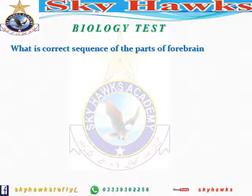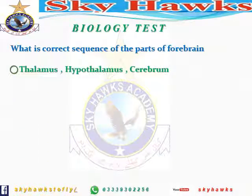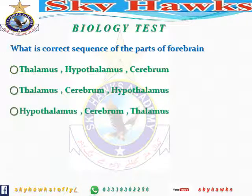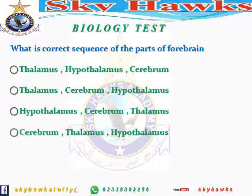Moving to our next question: what is the correct sequence of parts of the forebrain? The forebrain is divided into three parts. The options are: Thalamus, Hypothalamus, Cerebrum / Thalamus, Cerebrum, Hypothalamus / Cerebrum, Thalamus, Hypothalamus / Thalamus, Hypothalamus, Cerebrum. The correct sequence is: Thalamus, Hypothalamus, Cerebrum.